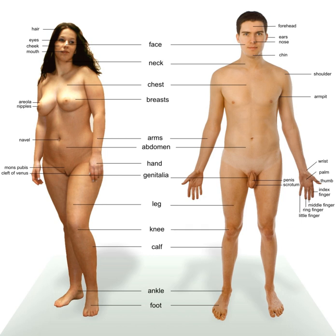In some species of reptiles, such as alligators, sex is determined by the temperature at which the egg is incubated. Other species, such as some snails, practice sex change—adults start out male, then become female. In tropical clownfish, the dominant individual in a group becomes female while the other ones are male. In some arthropods, sex is determined by infection. Bacteria of the genus Wolbachia alter their sexuality, and some species consist entirely of ZZ individuals, with sex determined by the presence of Wolbachia.